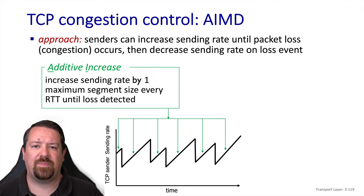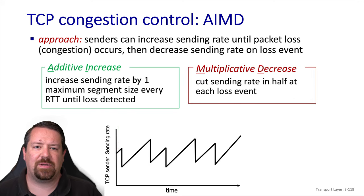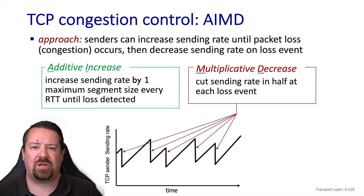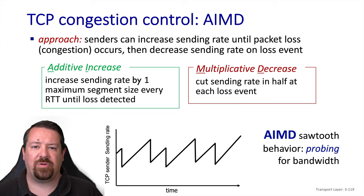This is implemented by increasing the window size by one MSS every round trip time until a loss event is detected. The multiplicative decrease part is cutting the window size in half each time a packet is lost. This is referred to as a sawtooth pattern, which represents TCP probing to see how much bandwidth is available in the network.